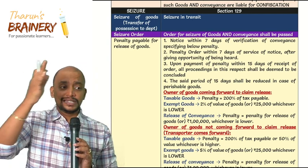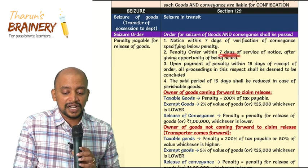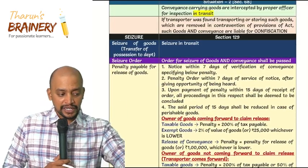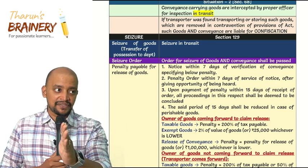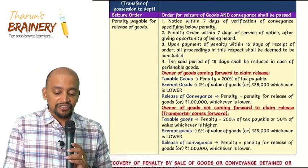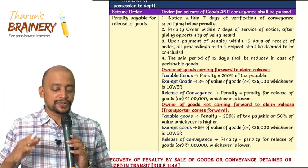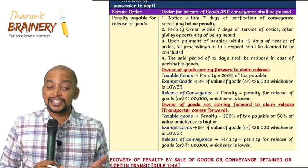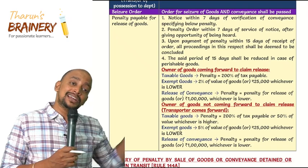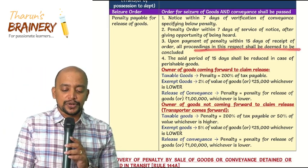Once the seizure order is passed, within 7 days they will give a notice for levying penalty. After giving notice, within 7 days they will pass a penalty order. So the sequence is: first, seizure order; then within 7 days, notice for penalty; then within 7 days, penalty order. Once the penalty order is passed, within 15 days of receipt the person must make the payment of penalty. In this situation — unlike situation 1 — only penalty needs to be paid, not tax. Tax can be paid later when the goods are actually sold. Once the penalty is paid, the goods will be released and all proceedings are deemed to be concluded.